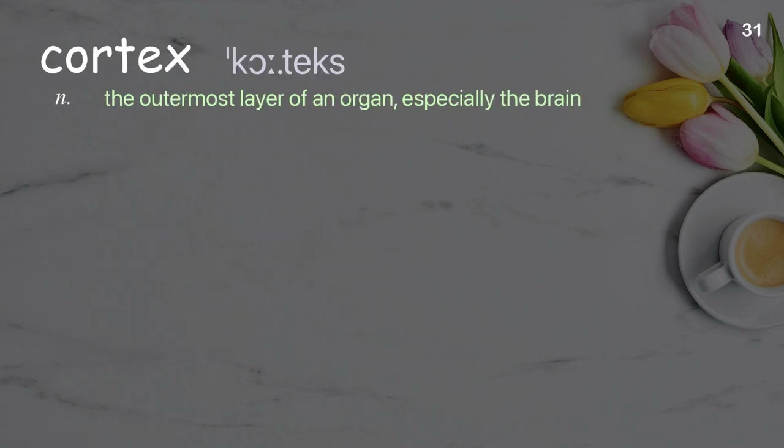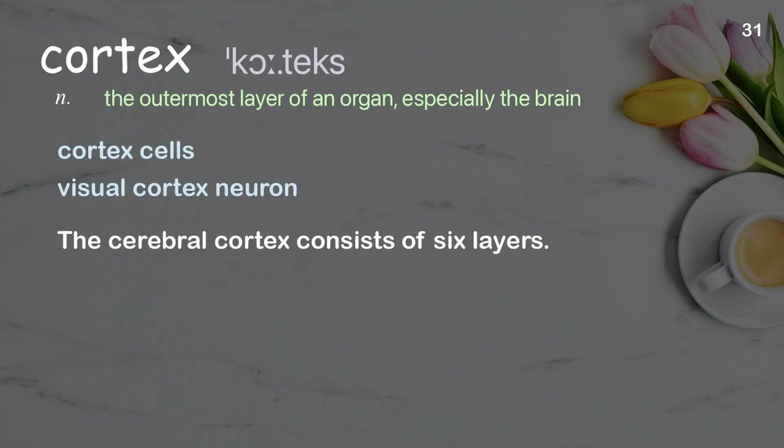Cortex: the outermost layer of an organ, especially the brain. Examples: Cortex cells. Visual cortex. The cerebral cortex consists of six layers.